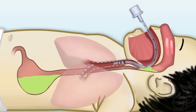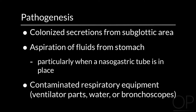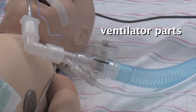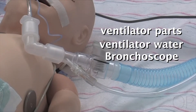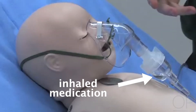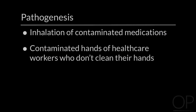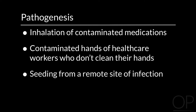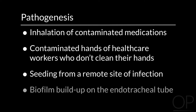particularly when a nasogastric tube is in place. Additional contamination sources include contaminated respiratory equipment such as ventilator parts, water, or bronchoscopes; inhalation of contaminated medications; the contaminated hands of health care workers who don't clean their hands before manipulating the endotracheal tube during intubation or suctioning; seeding from a remote site of infection; or biofilm buildup on the endotracheal tube.